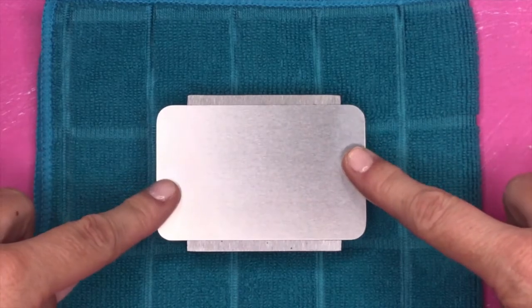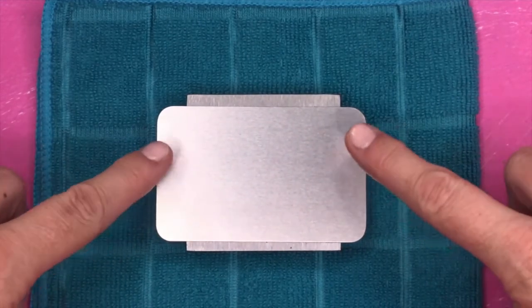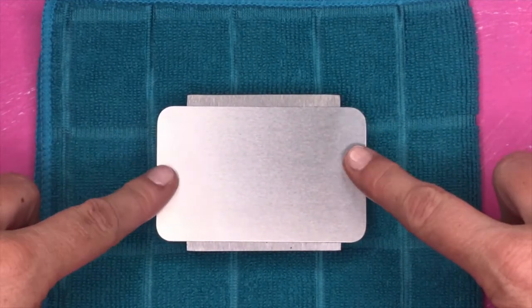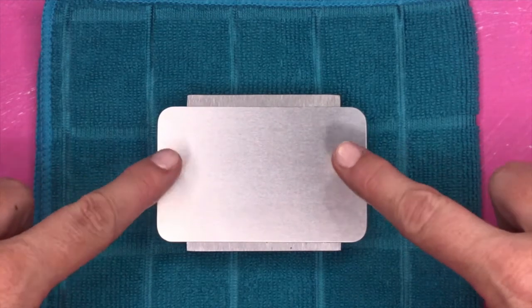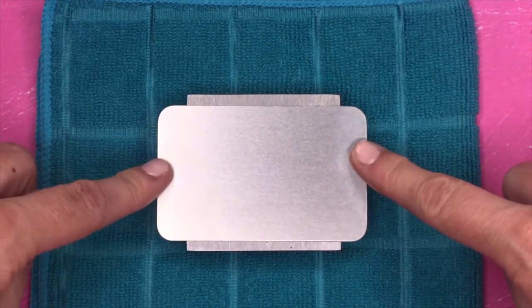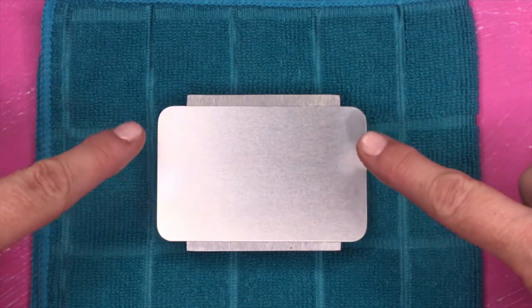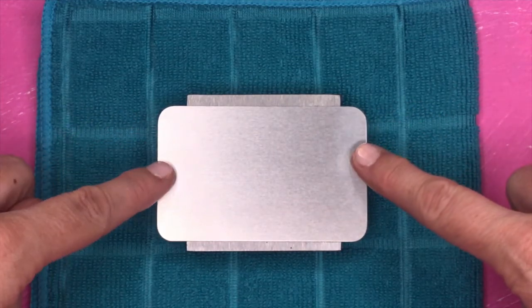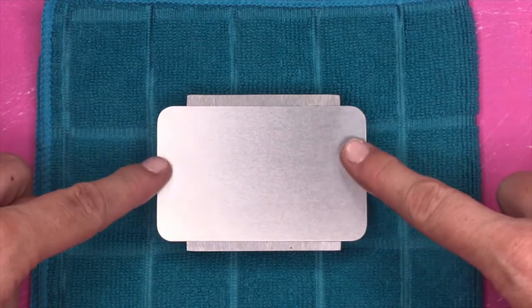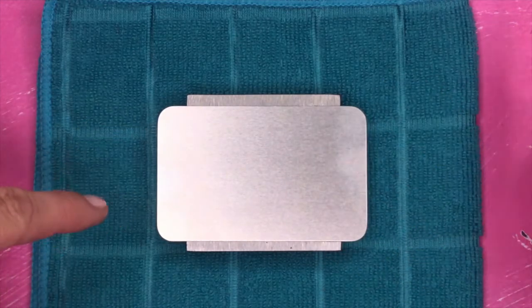I have my practice metal square. Again, remember yours can be a different size or a different color, but I want you to use this practice metal square just to get comfortable with stamping. I want you to get comfortable hitting the stamp and practicing here before you start working on your metal plates.